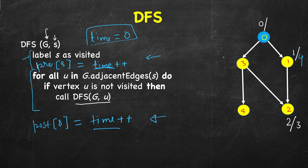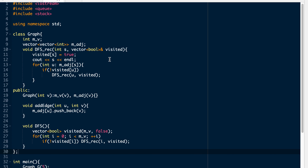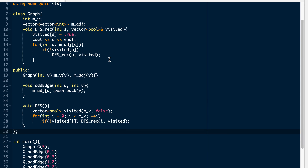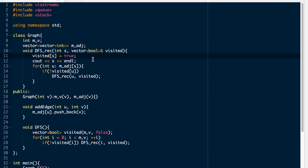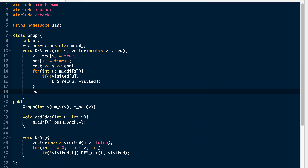So from the example: node returns at time three, then four, then we come here at time five, go here at time six, return at seven, eight, and finally nine. With five nodes we have times from zero to nine — ten values. Let's write the code. I'll modify it for C++; it should be trivial to do for Java and Python. This was our earlier code — same graph, recursive DFS. What we need to add is: pre[s] = time++ just when we visit a node, and post[s] = time++ when we are done with it.